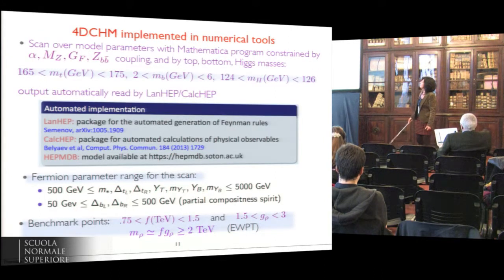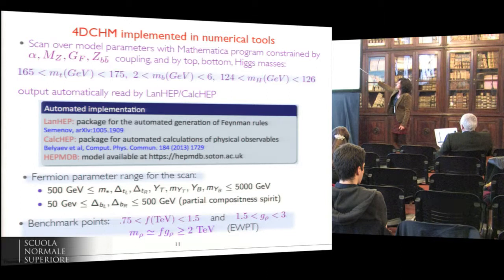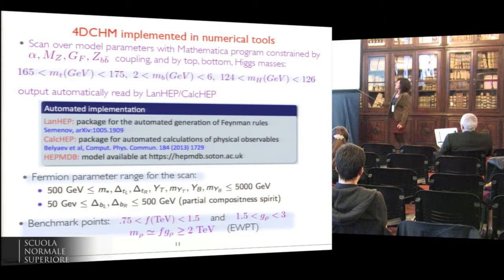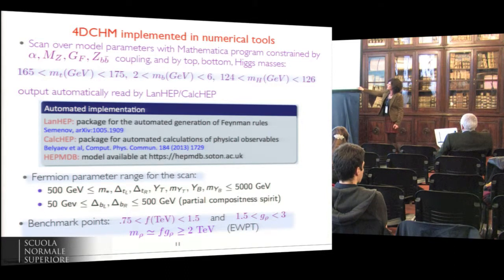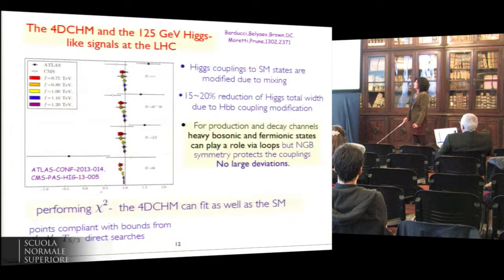We implement the four-dimensional composite Higgs model in FeynRules and CalcHEP and scan over the model parameters with these inputs, using benchmark points obtained by varying the composite scale and the strong coupling in a natural interval.